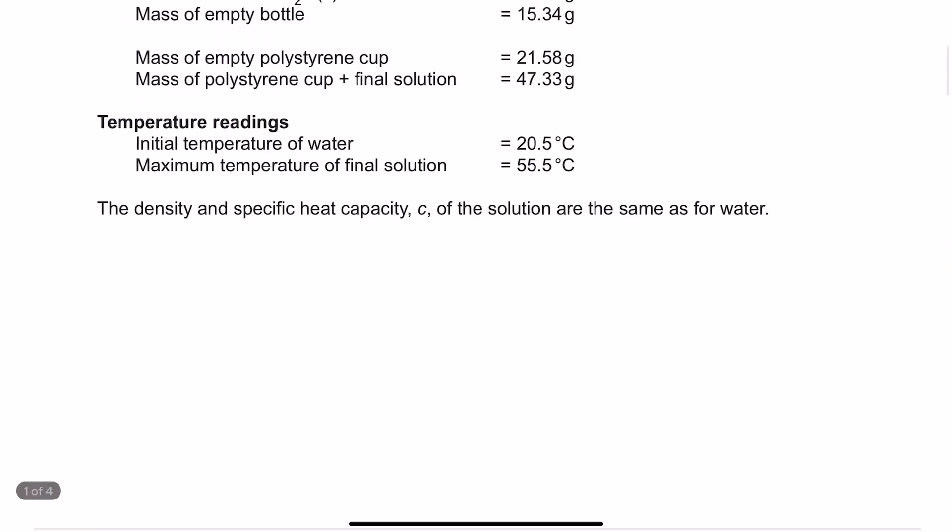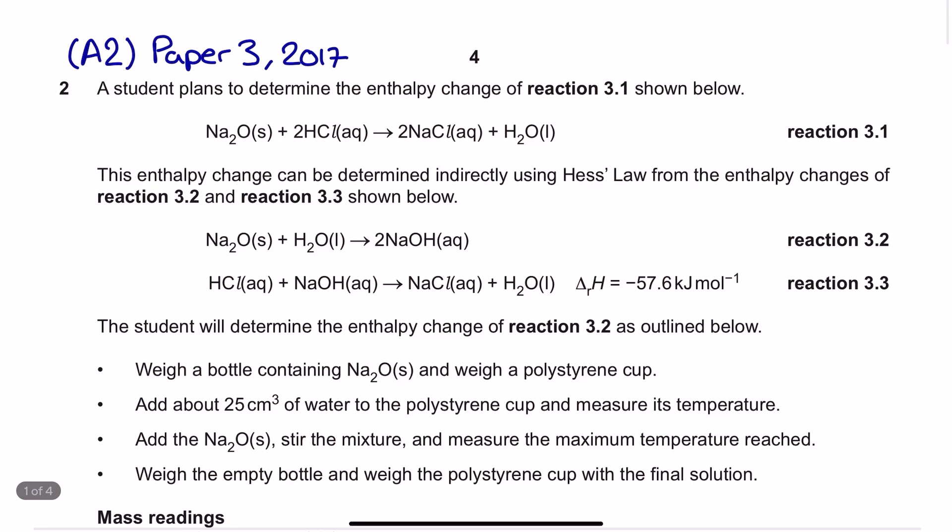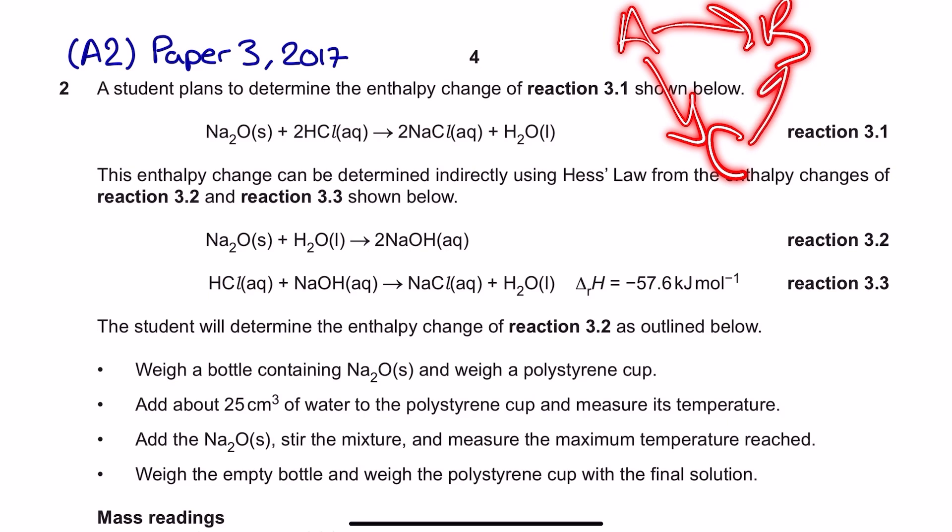Essentially what we need to be able to do for this question is link these three different reaction equations up in a Hess cycle and reaction 3.1 is going to be the A to B over the top part of this and then our other reactions are going to take us around this bottom section to meet the demands of Hess's law.